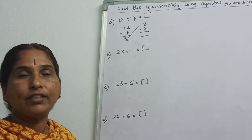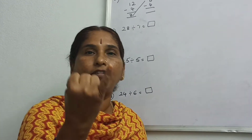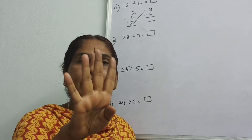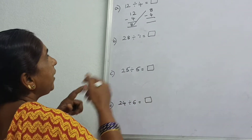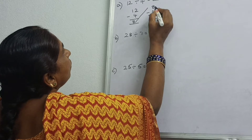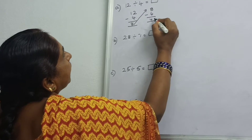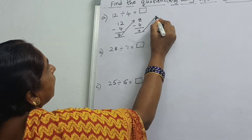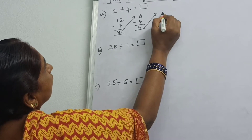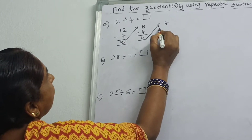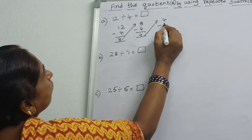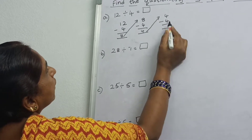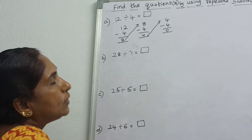Now subtract again: 4 after — 5, 6, 7, 8. How many? That's 4. So 8 minus 4 is equal to 4. Again take 4 into the next box. Again subtract with 4. 4 minus 4 is equal to 0.